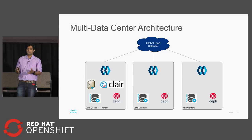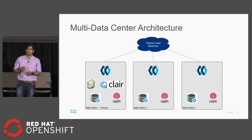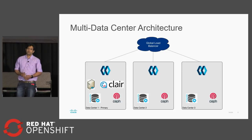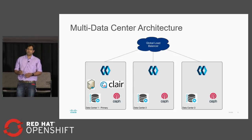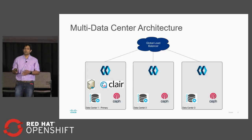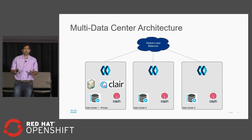This is our current deployment of Quay. We deployed it in three data centers — data center one being the primary, data centers two and three are secondary. Each data center has a load balancer in front of it, and all three load balancers connect to a global site load balancer. In data center one we have Quay, build servers, Clair for security scanning, Postgres for the database, and Ceph for storage. The database is only active and passive — the primary database is in data center one, and failover is manual. These Quay instances are deployed on individual VMs, not on OpenShift as of now.